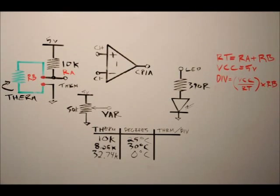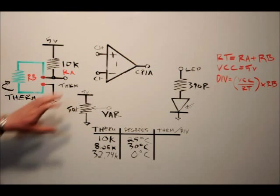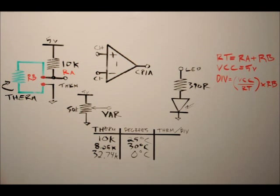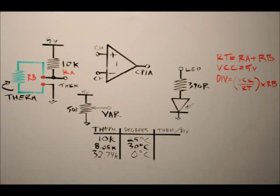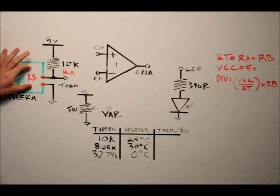Hi everybody, this is project six for the multi-sensory electronic learning board. Today we're going to talk about the thermistor and explore a couple different blocks, but first we have to go back and talk about voltage dividers again. The data sheet for the thermistor labeled RB will get to the diagram in just a second.